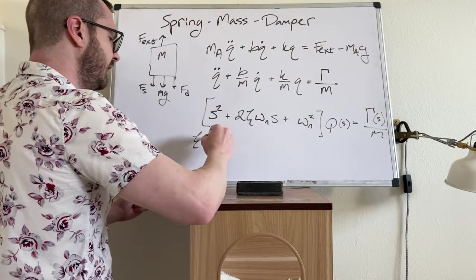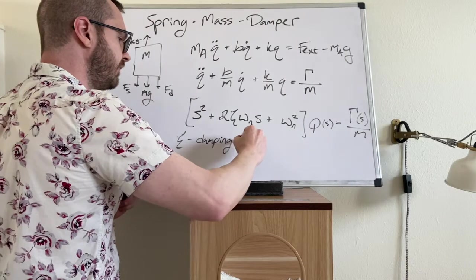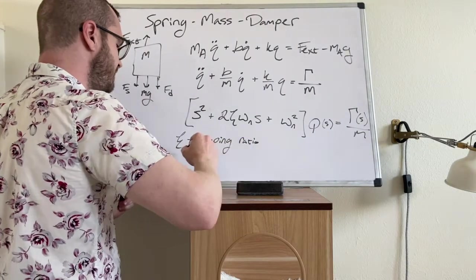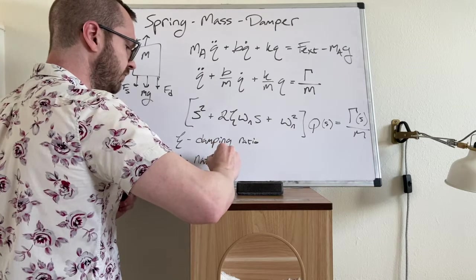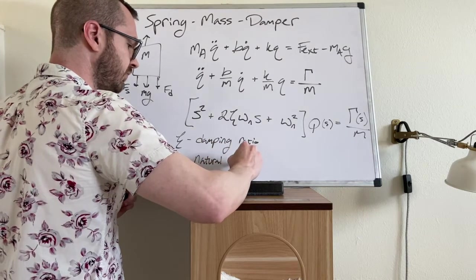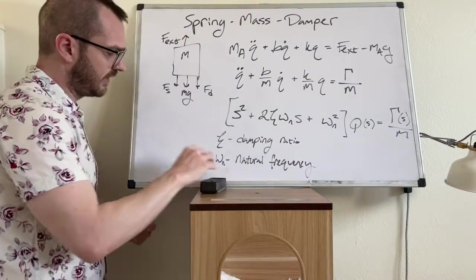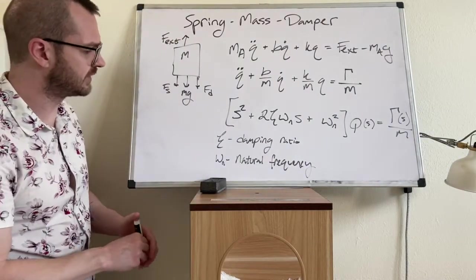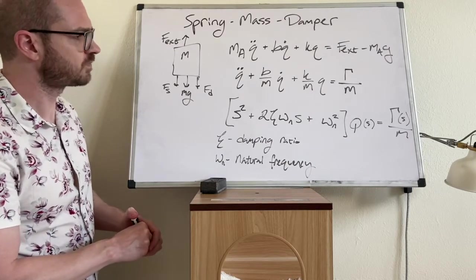And the zeta is your damping ratio and omega N is called natural frequency. Specifically, there's several or a couple types of this natural frequency. This is your undamped natural frequency. Okay.